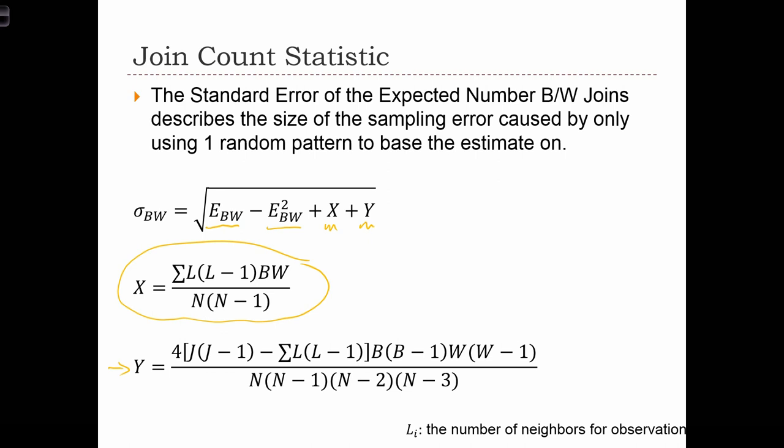All of the terms appear before and are defined as before, except we now have this new L. L_i is the number of neighbors for observation i. So for each polygon on the map, we can have an L, and that's just going to count how many neighbors polygon i has.